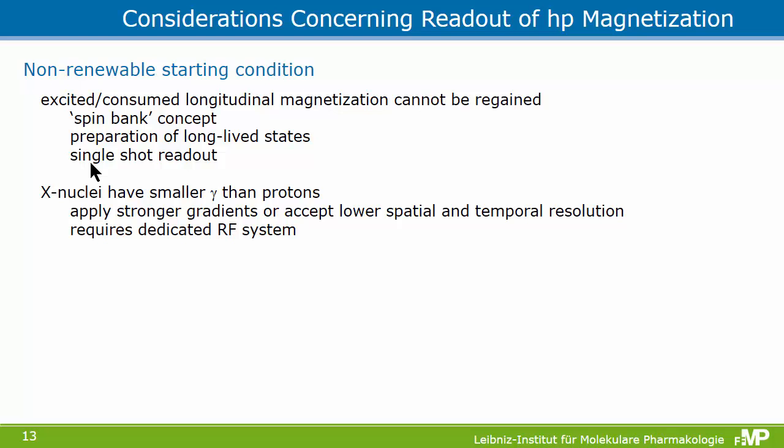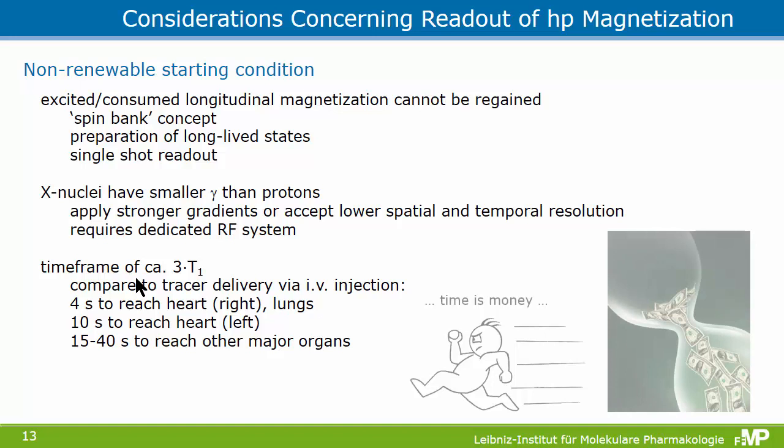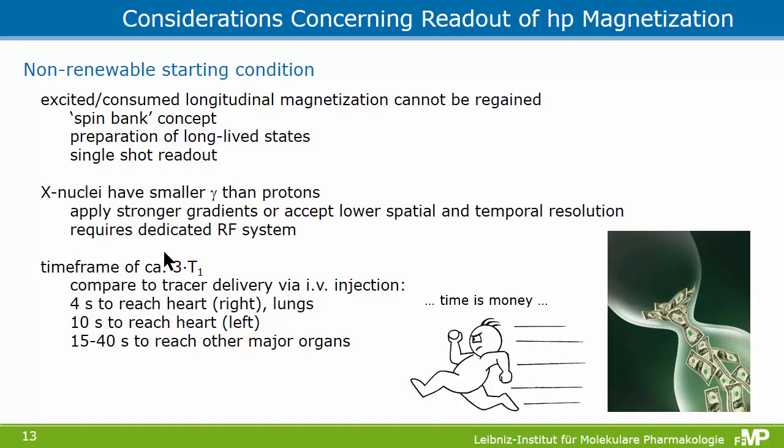Another aspect is that if you go away from water and want to detect nuclei other than protons, these nuclei have a smaller gamma than protons. If you want comparable resolution you need stronger gradient systems. While this may not be a typical problem since you work with larger pixel resolution, it at least requires a dedicated RF system operating at the frequencies of these X nuclei. And of course, one important aspect in hyperpolarization is that time is money.